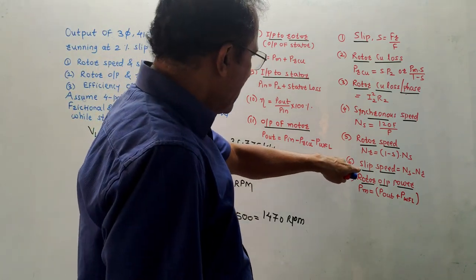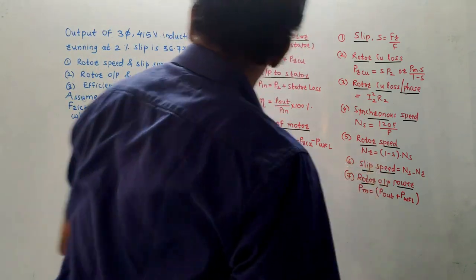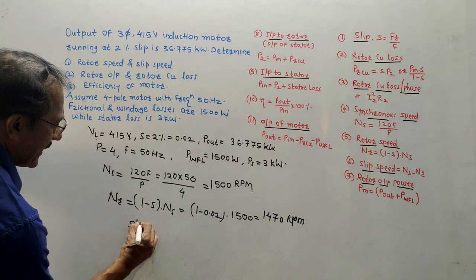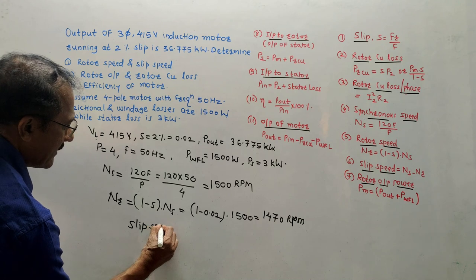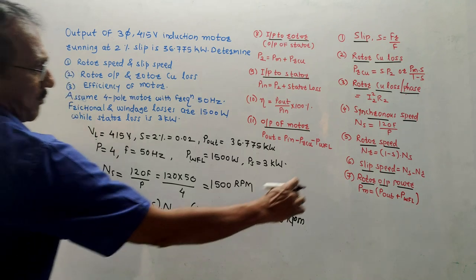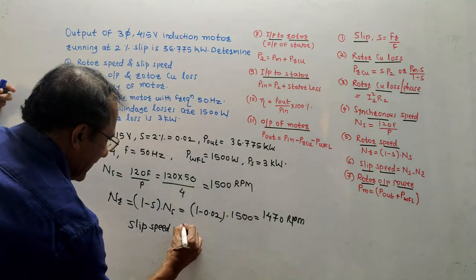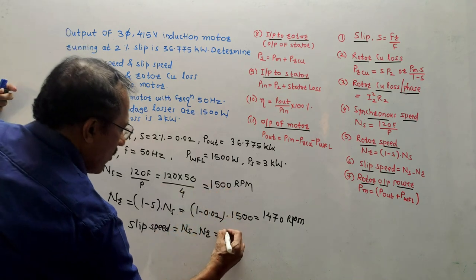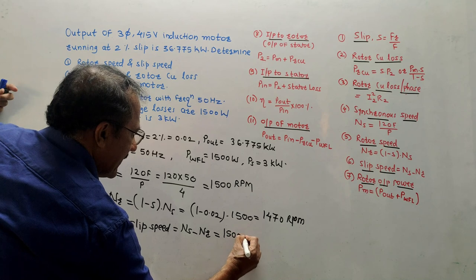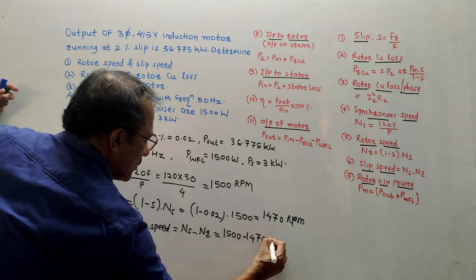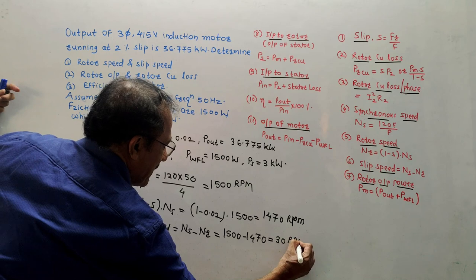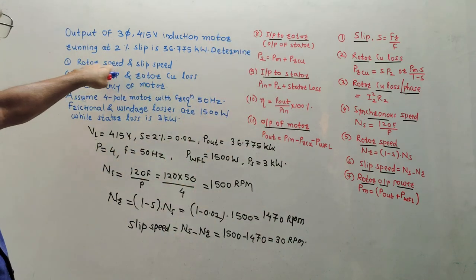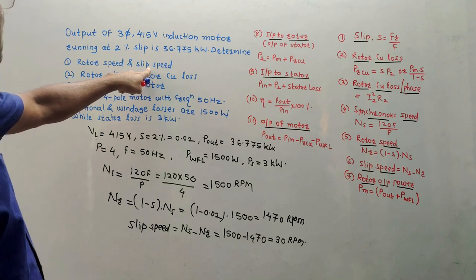Now we calculate slip speed. Using formula number 6, slip speed = NS − NR = 1500 − 1470 = 30 RPM. This is the value of slip speed. So we have calculated both rotor speed and slip speed.